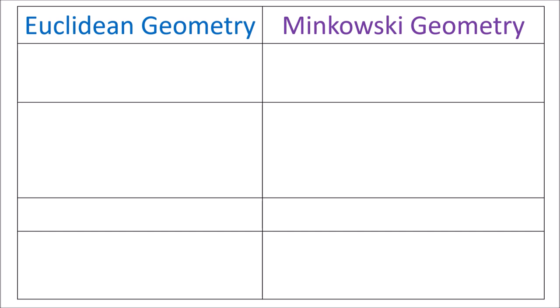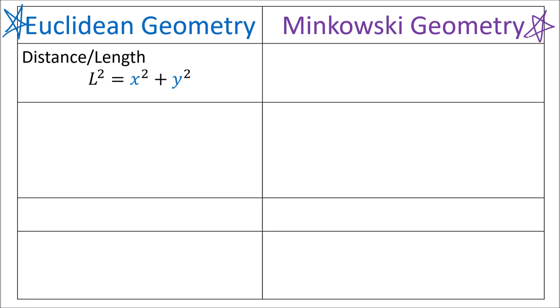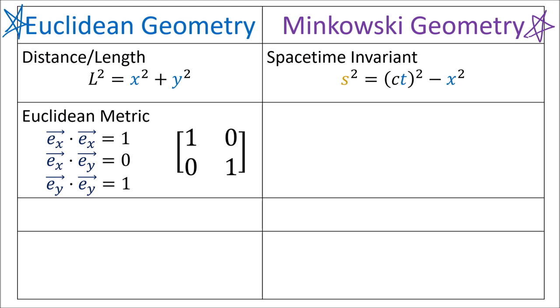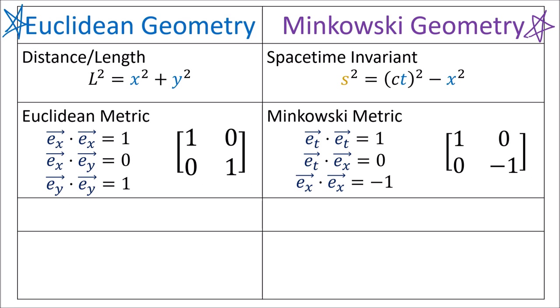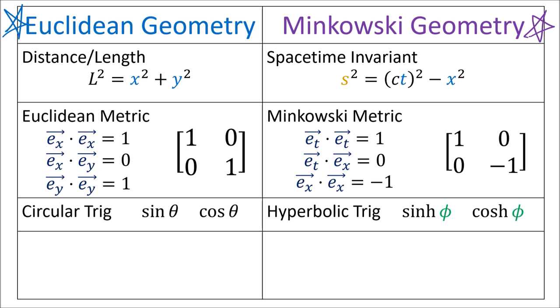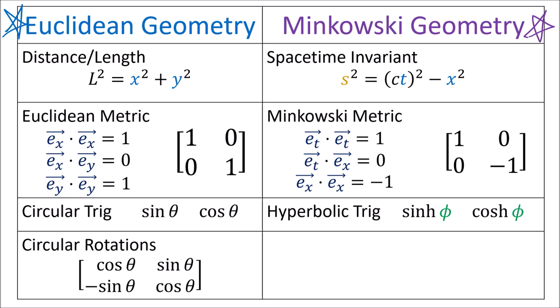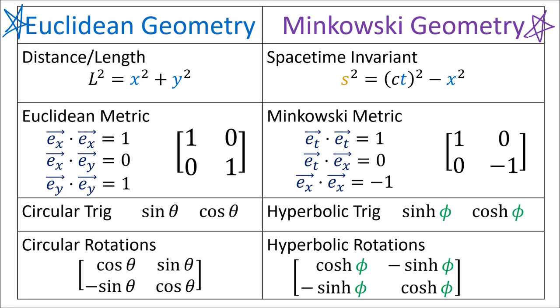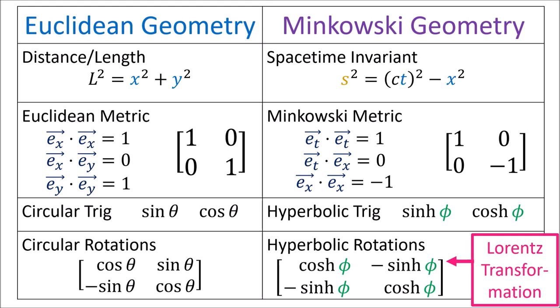This video is going to be about taking geometry familiar in everyday life — Euclidean geometry — and changing it slightly to get Minkowski geometry, the geometry of spacetime and special relativity. Instead of measuring distances using x squared plus y squared, we use ct squared minus x squared. Instead of the Euclidean metric's orthonormal dot products, we'll use the Minkowski metric. And instead of circular trig functions, we'll use hyperbolic trig functions and hyperbolic rotations. Lorentz transformations are really just hyperbolic rotations.